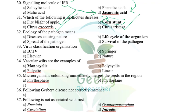Ecology of the pathogen means studying the life cycle — how the pathogen spreads, causes disease, its habitat from start to end. So ecology of the pathogen means life cycle. The virus classification organization is ICTV (International Committee on Taxonomy of Viruses). Previously called ICNV (International Committee on Nomenclature of Viruses), established in 1966, it changed to ICTV in 1973.